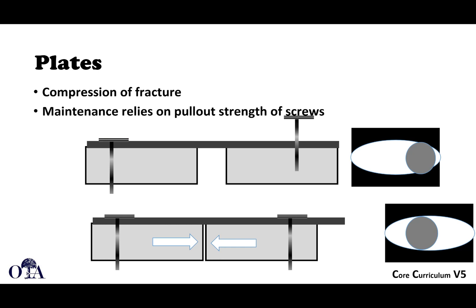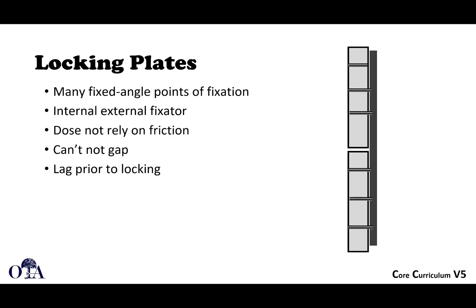You can also achieve compression using oval holes in a plate. Place the screw at one side of the oval hole; as the screw seats, it moves toward the center of the hole, forcing the plate in the opposite direction and compressing the fracture. With locked plating, the plate is not compressed down to the bone. Instead, you have multiple fixed-angle points of fixation — the screws won't toggle — making it function like an internal external fixator, without relying on friction.